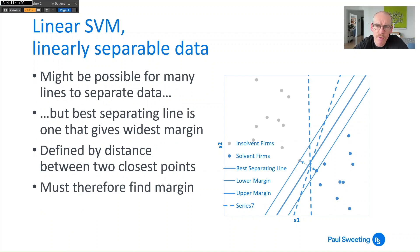Well although there are many ways that you can separate the data, the best way is the separating line which gives the widest margin between the two sets of data and this margin is defined by the two closest points to each other. So what you need to try to do is try to find this margin, try to find out what the largest margin is because this will define the line that you use, the best separating line between these two data sets.